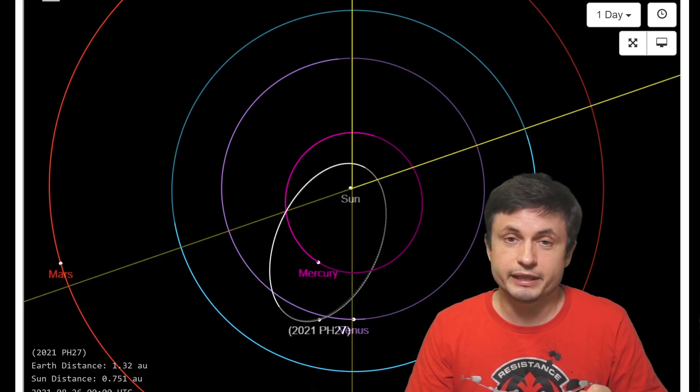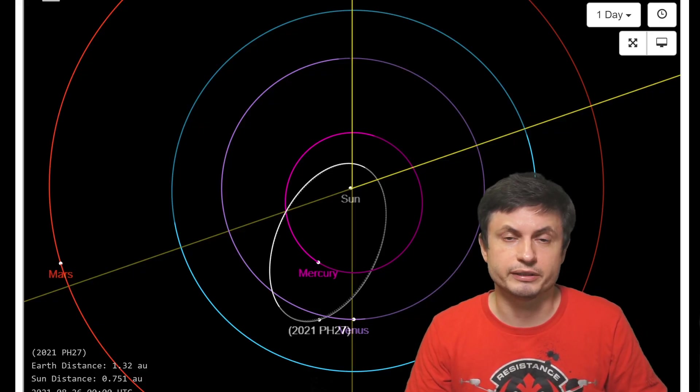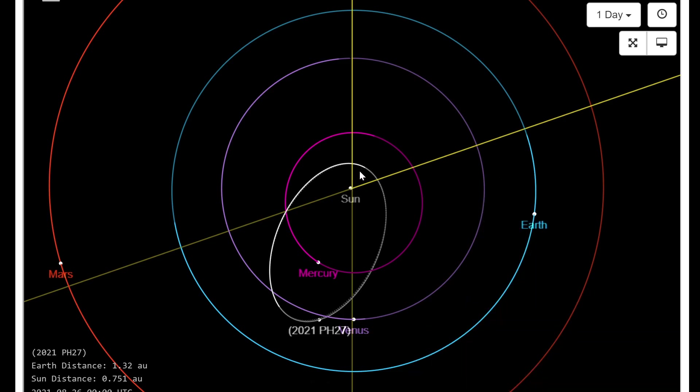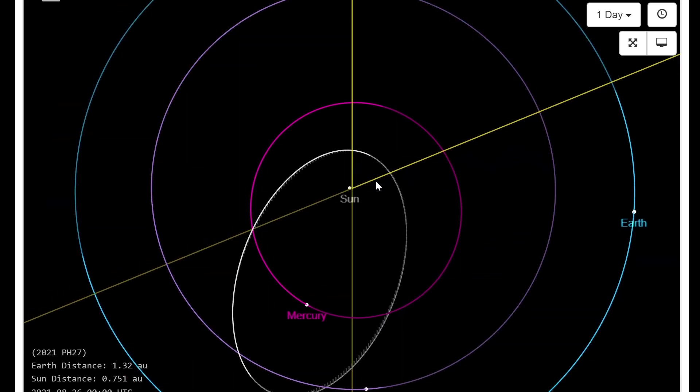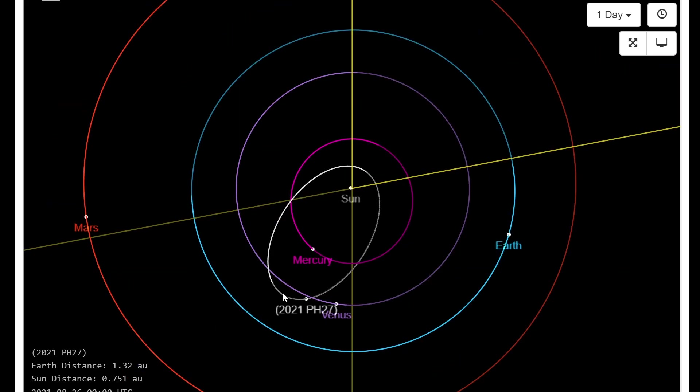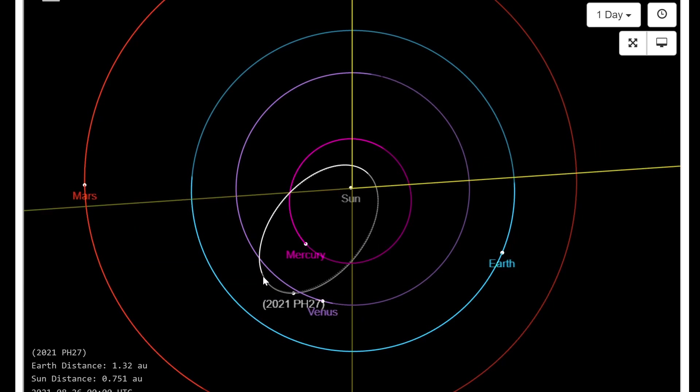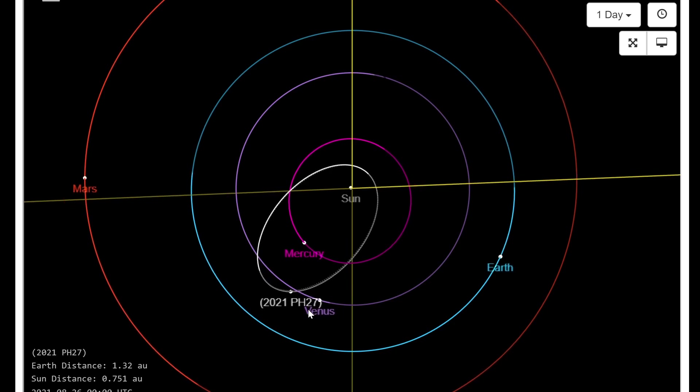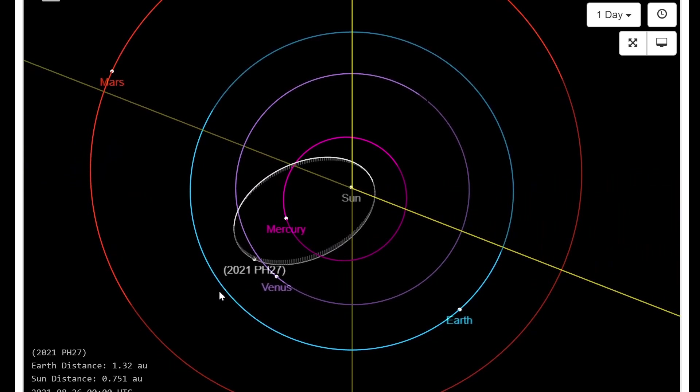With the initial calculations suggesting that it actually comes much closer to the sun than Mercury, with the shortest distance here being about 12 million miles or about 20 million kilometers, or as you can see here, roughly around half the distance of Mercury, with the aphelion, also known as the farthest part of the orbit, taking it slightly farther than the orbit of Venus, but obviously never reaching the orbit of Earth.